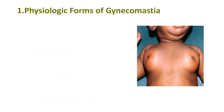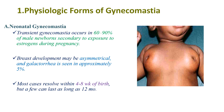There are two types of gynecomastia: physiologic and pathologic. Starting with the physiologic form, there are also two types. The first is neonatal gynecomastia, which is a transient gynecomastia occurring in 60–90% of male newborns, secondary to exposure to estrogen during pregnancy.